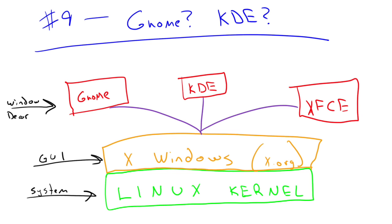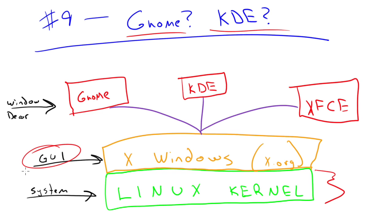Number 9: GNOME, KDE — what on earth are all these things? I thought we had different distributions, but when I install a distribution I get offered the option of installing GNOME or KDE. What does that mean? Well, we have to look quickly at what Linux itself is. Linux is just the text-based kernel — the underlying operating system that will function whether or not you have a pretty graphical interface.